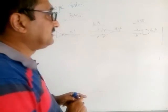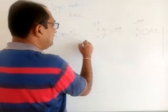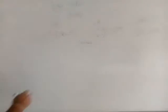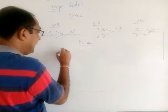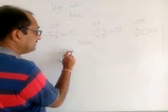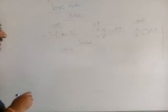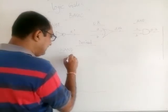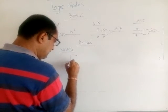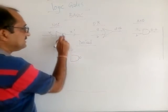These basic gates are combined to get other kinds of gates, which are called derived gates. One derived gate is NAND. NAND is basically a combination of NOT and AND — NOT gate and AND gate combined together is called NAND. The NAND symbol looks like the AND gate symbol but with a small circle added at the output.